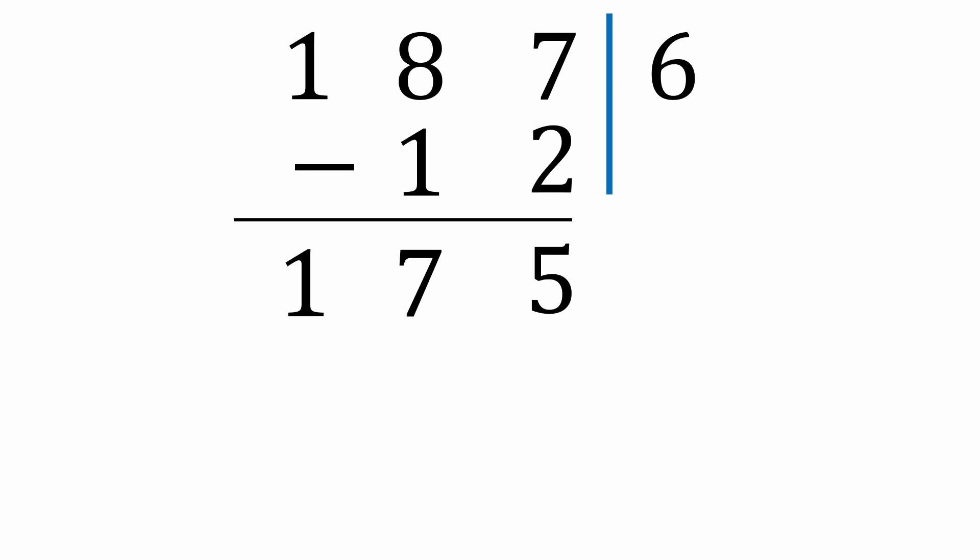If you're not sure if 175 is divisible by seven, repeat the same process. Remove the five, since it's the last digit, double it to get 10, and subtract 10 from the remaining digits. 17 minus 10 is seven, and that is divisible by seven, which means so is 1876.